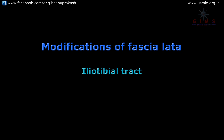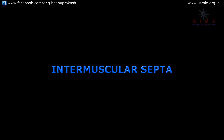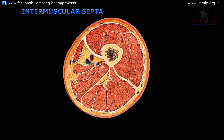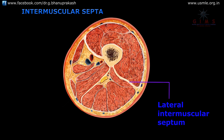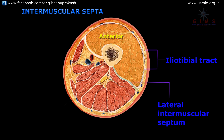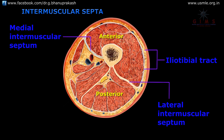The fascia lata also gives off intermuscular septa, which divide the thigh into three compartments. The lateral intermuscular septum is the thickest of all the septa and extends from the iliotibial tract to the lateral lip of the linea aspera. This lateral intermuscular septum separates the anterior compartment of the thigh from the posterior compartment. The medial intermuscular septum is attached to the medial lip of the linea aspera and separates the anterior compartment from the medial compartment.